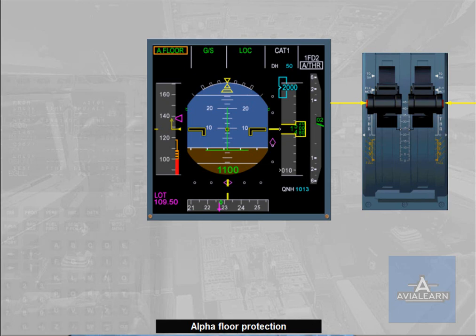Note: the alpha floor protection is lost in case of combinations of failures, or if at least one thrust lever instinctive disconnect push button is pressed for more than 15 seconds. The alpha floor protection is also lost in case of engine out when slats and flaps are extended above configuration 1.